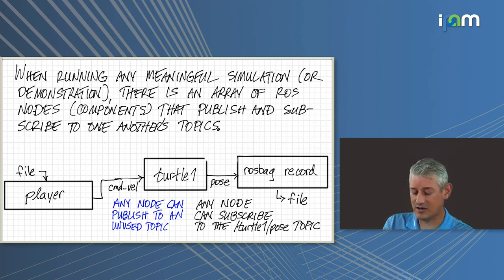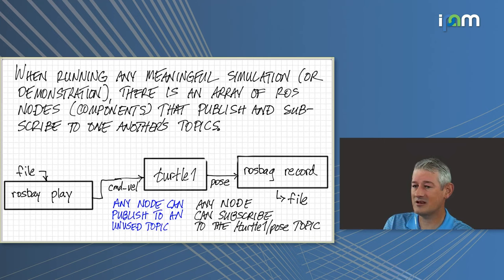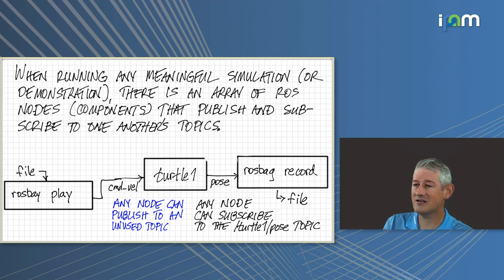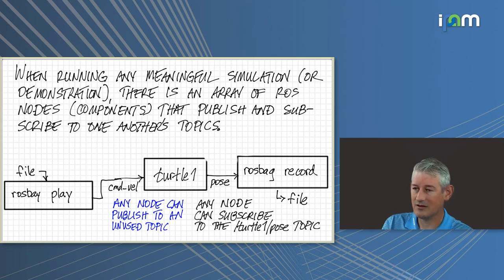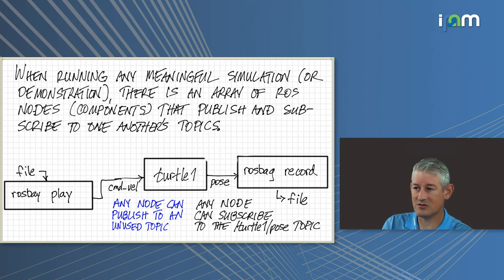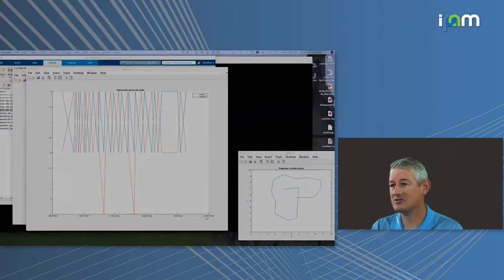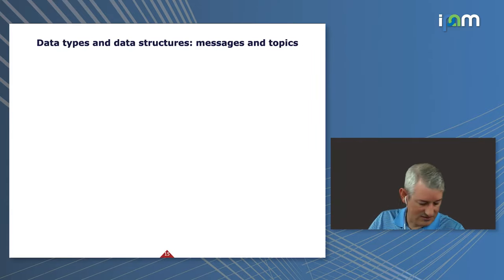Whatever file you provide to the player, it will pass in that command velocity message. This is what can be really compelling: you can switch back and forth when testing your component — whether you're getting data from a simulator, a joystick, a MATLAB-generated model, or Python. These are the many kinds of configuration options that allow us to do software-in-the-loop and hardware-in-the-loop kinds of testing.